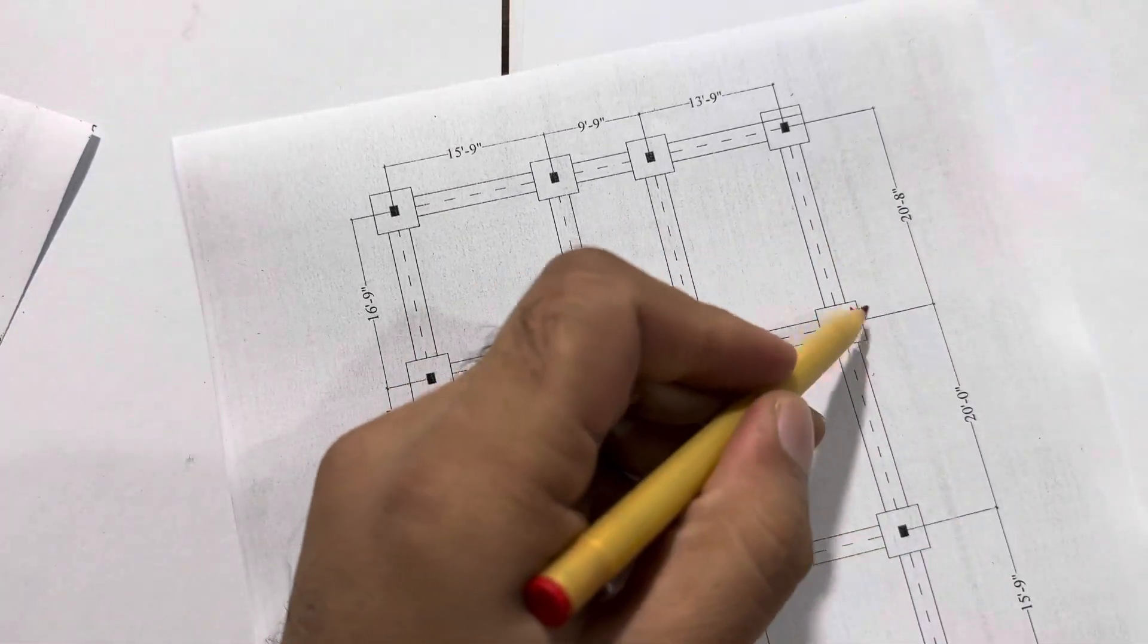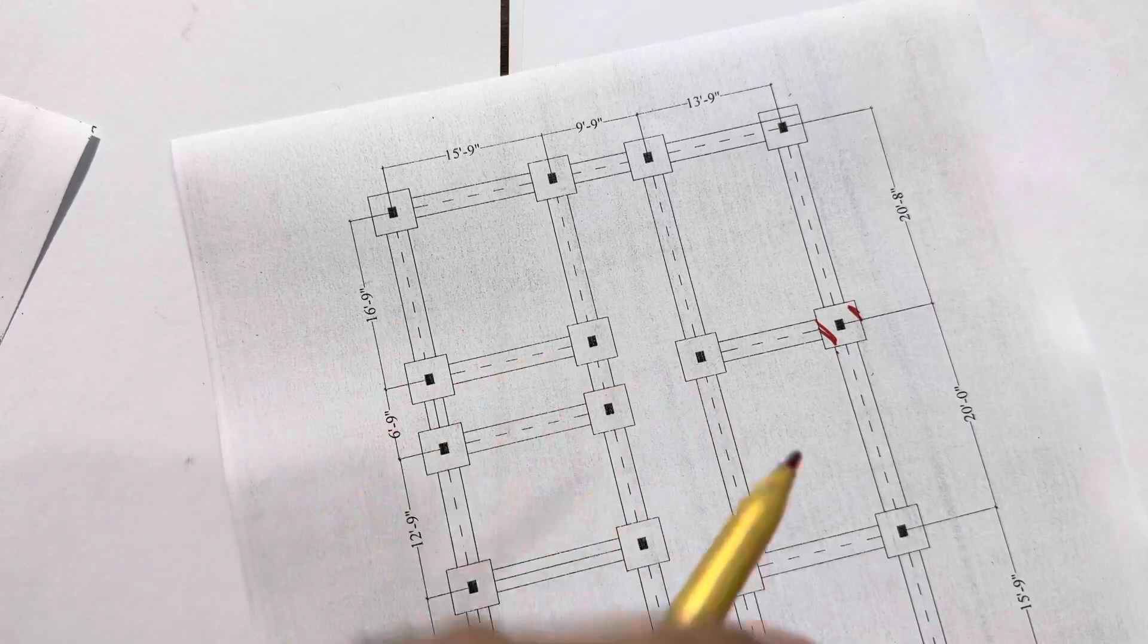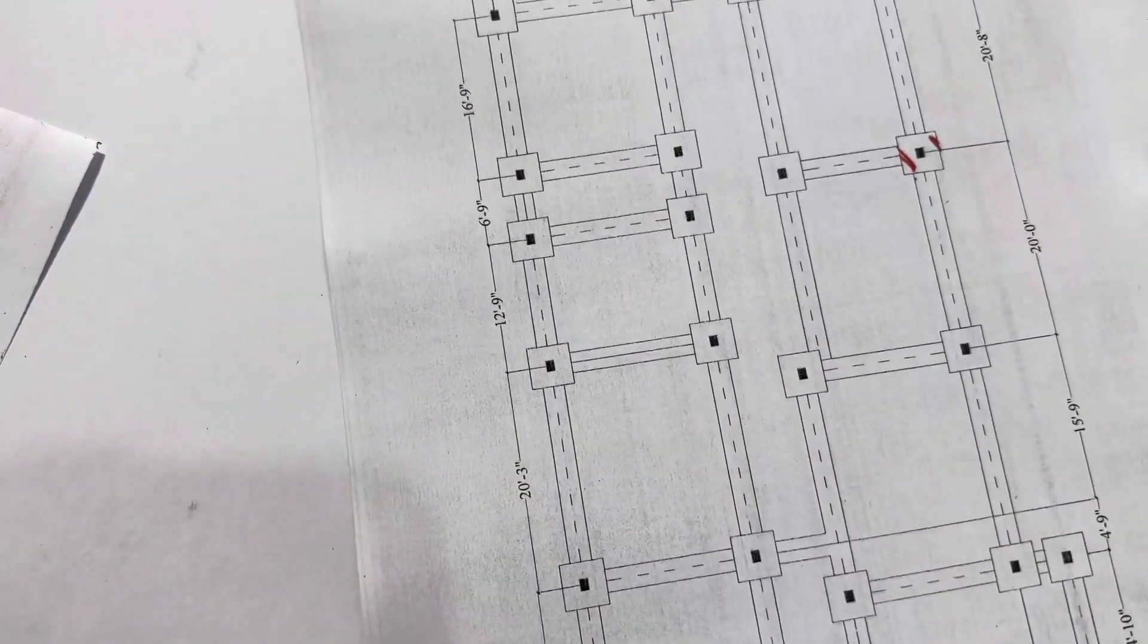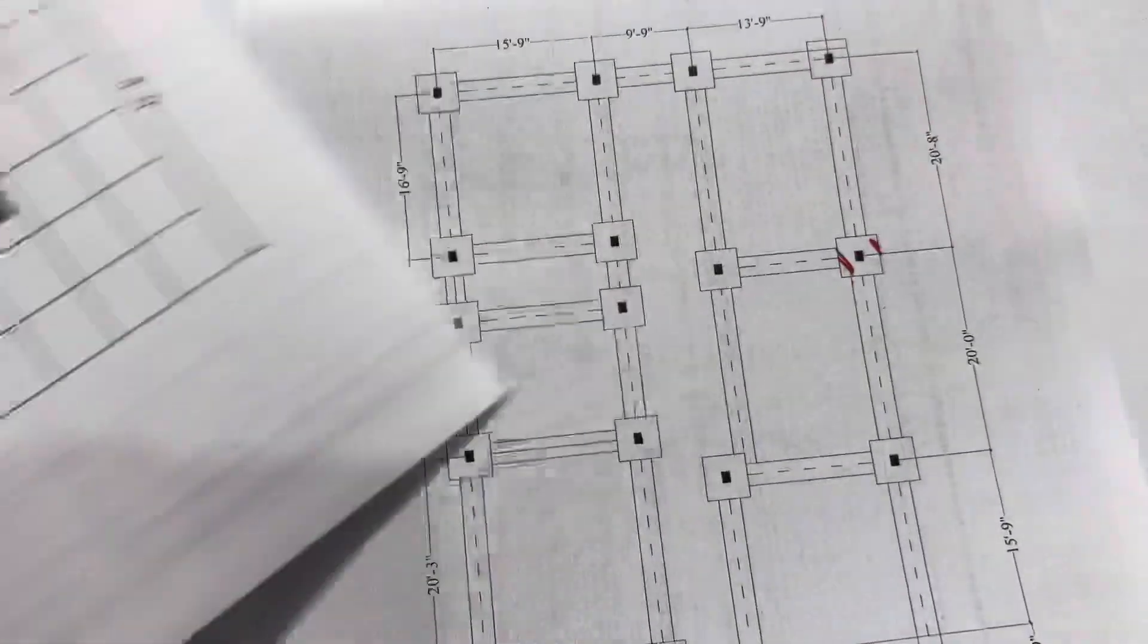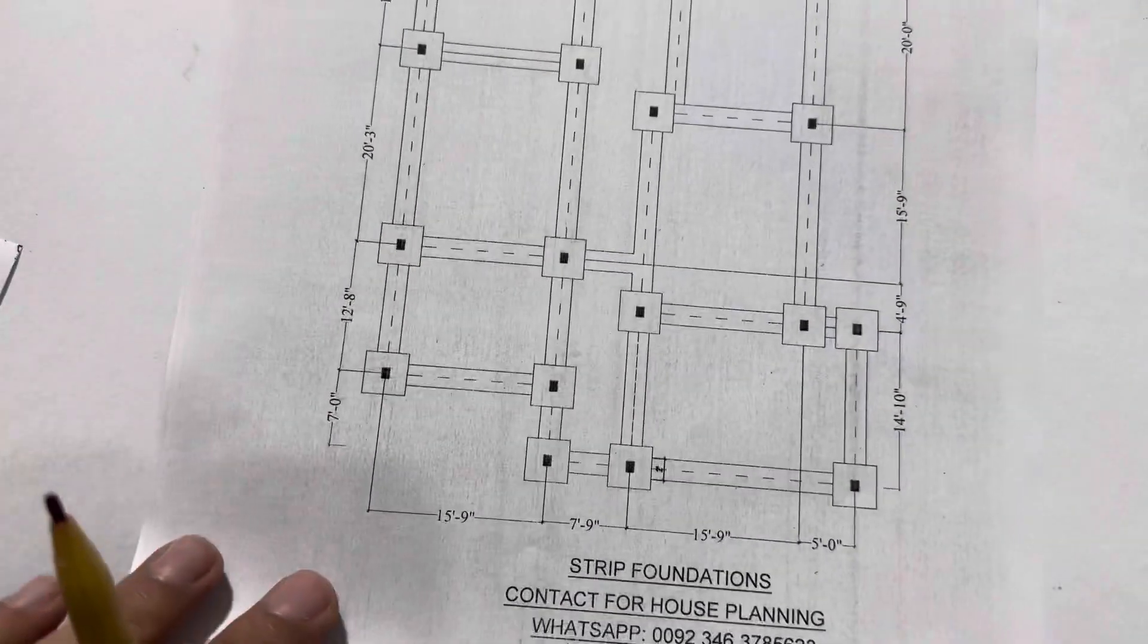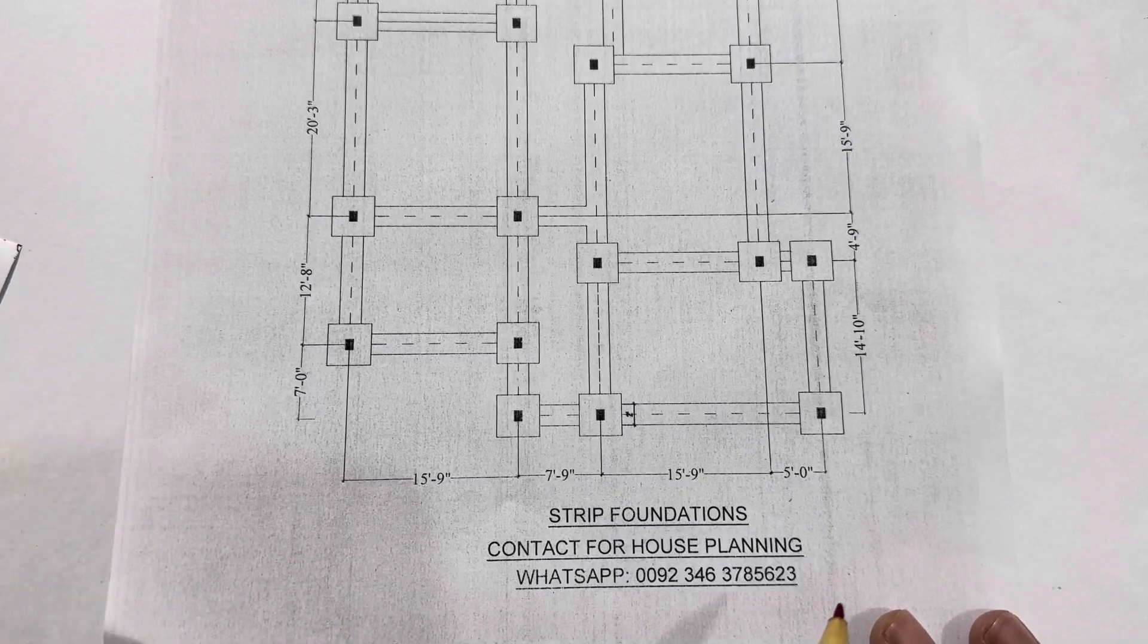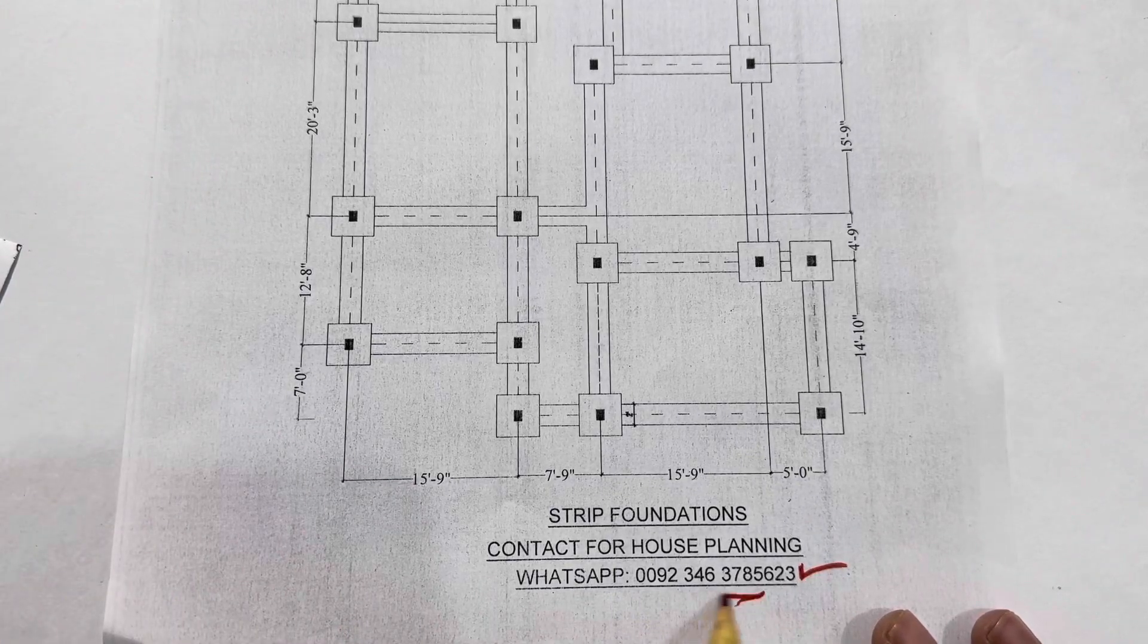As you can see, this is a steel structure design for footing and its section. If you need house planning, structural drawing, 3D animation for any type of building, you can contact me on this WhatsApp number. This is paid service, not for free.